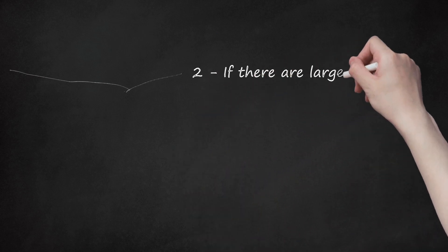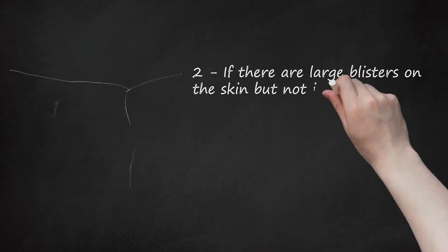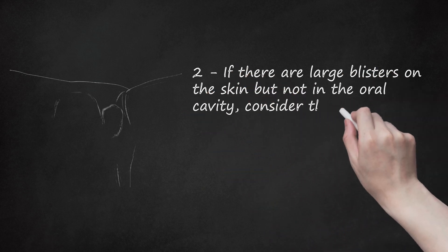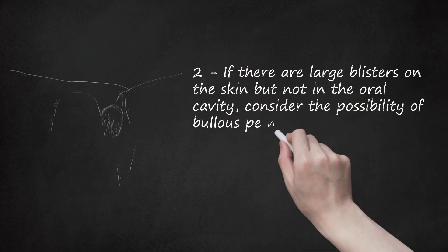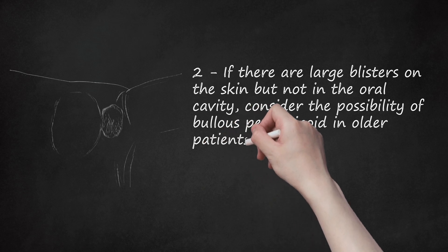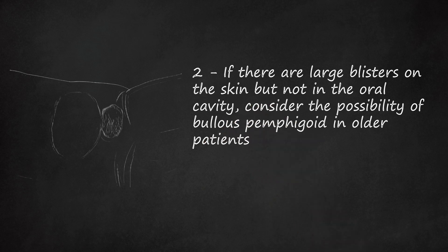Step 2: If there are large blisters on the skin but not in the oral cavity, consider the possibility of bullous pemphigoid in older patients. It differs from pemphigus vulgaris in that it usually affects persons between the ages of 60 and 80, and also by the lack of oral lesions. It is, however, similar to pemphigus vulgaris in that it is also mediated by the action of immunoglobulin G.